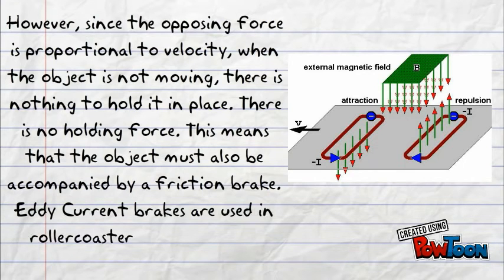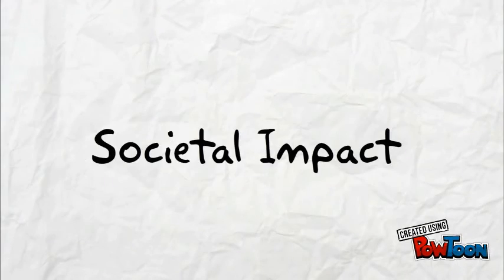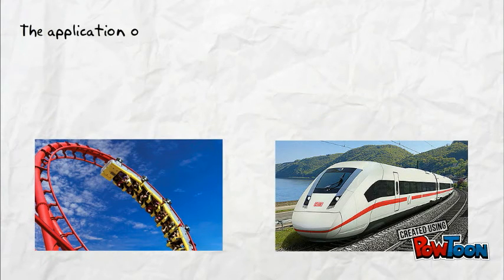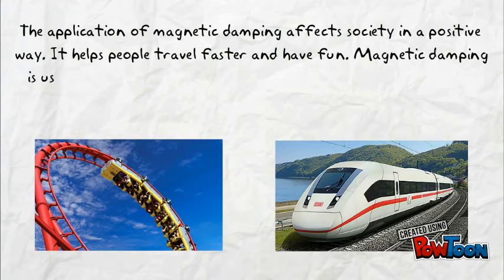Eddy current brakes are used in roller coasters and high speed trains. Now we are going to look at the societal impact of this. The application of magnetic damping affects society in a positive way. It helps people travel faster and have fun.